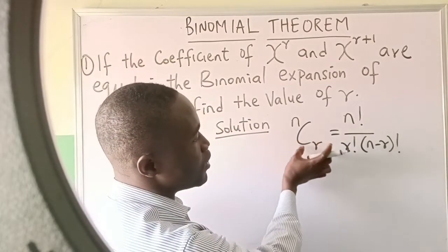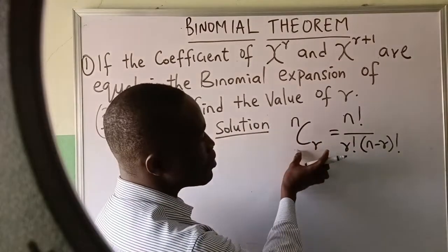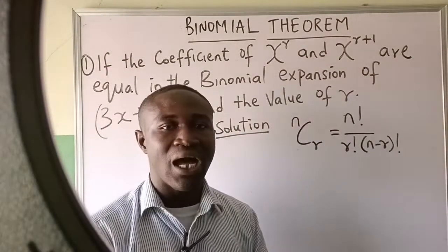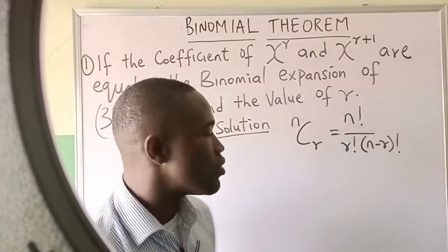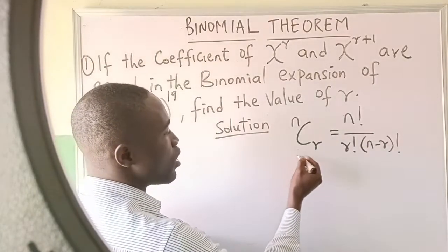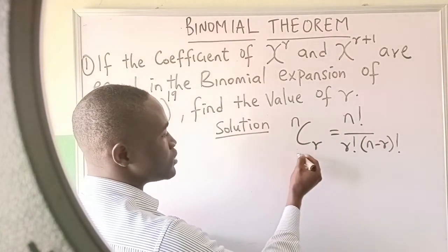You can also use Pascal's triangle to get the combinatorial coefficient. This n combination r can be obtained using Pascal's triangle, so let's look at a simpler way of drawing it.